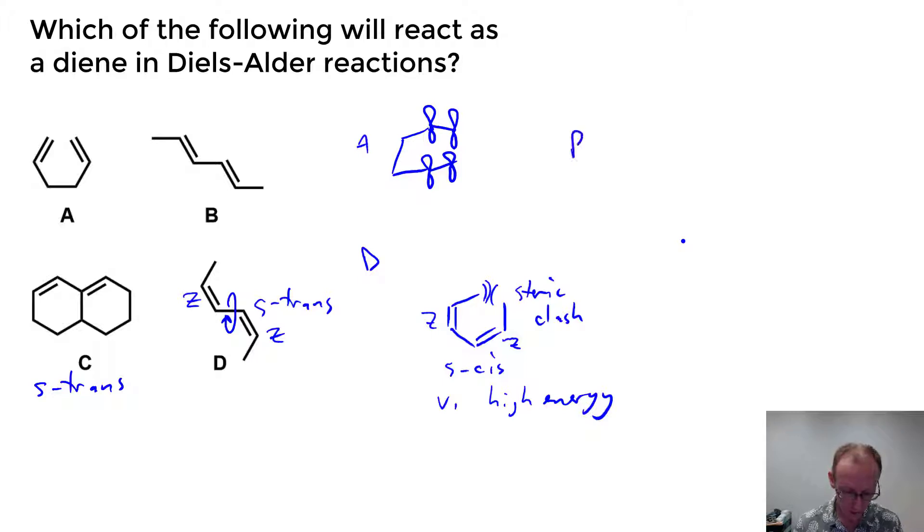Therefore we wouldn't expect that diene to undergo Diels-Alder reactions because it's so hard for it to adopt an s-cis conformation. So that just leaves B. We've got once again a diene in the s-trans conformation but this time both the double bonds are in the E configuration. So if I rotate around this bond here we can get to the s-cis conformation and this molecule can react as a diene in Diels-Alder reactions. That's the answer.